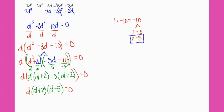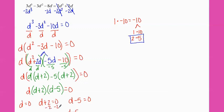Now each of these three terms could equal zero: d could equal zero, d plus two could equal zero, or d minus five could equal zero. Adding five gives d equals five. Subtracting two gives d equals negative two. Or d equals zero — that one's already solved.